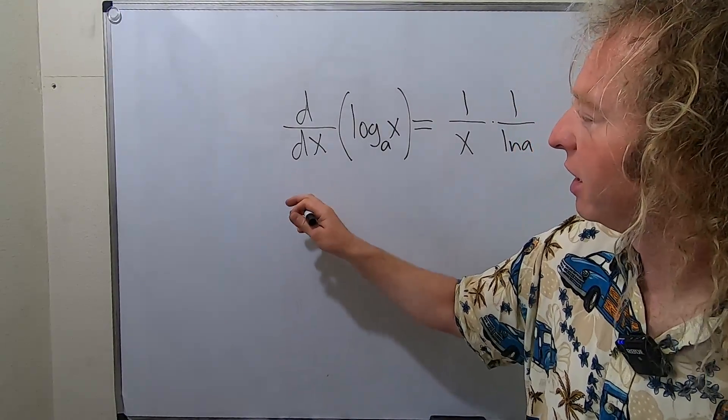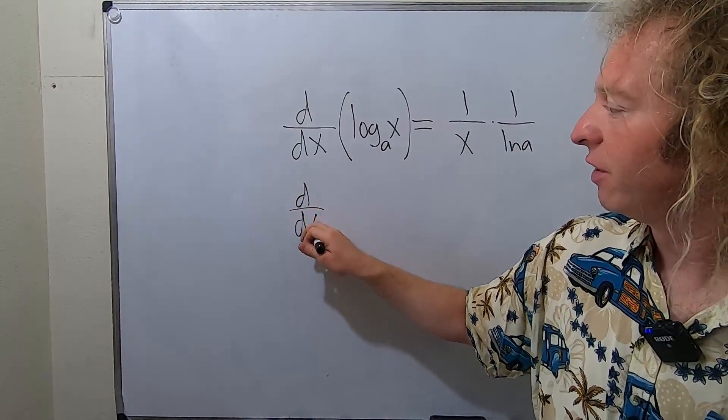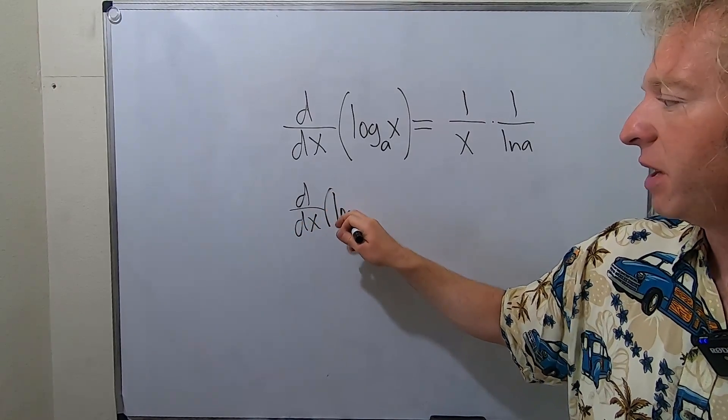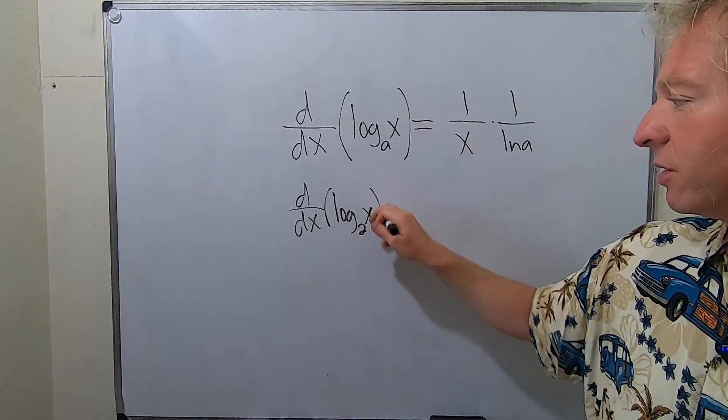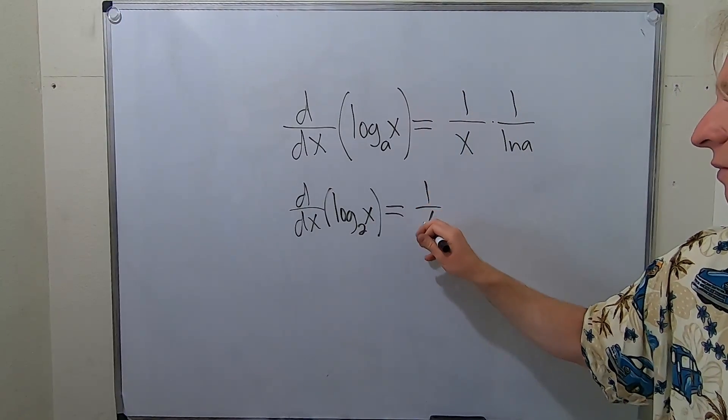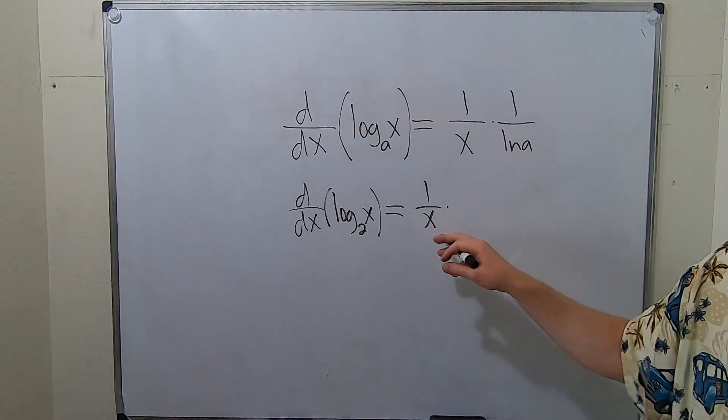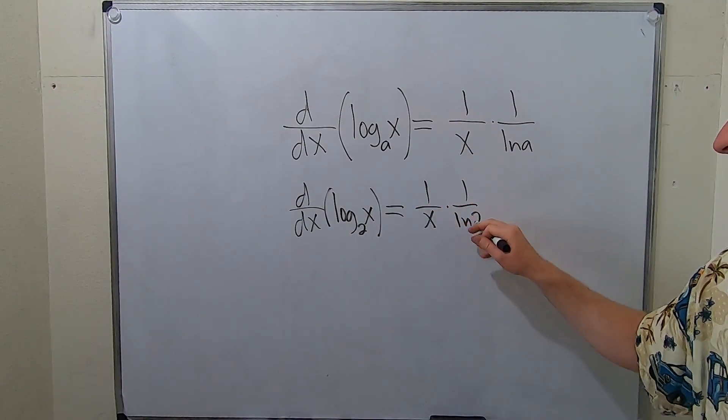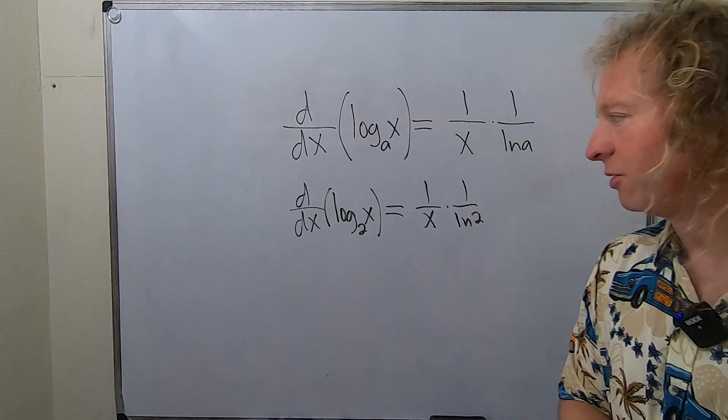Let's do some examples right away. The derivative of log base 2 of x is just 1 over x times 1 over ln 2. That's it, that's how you do it.